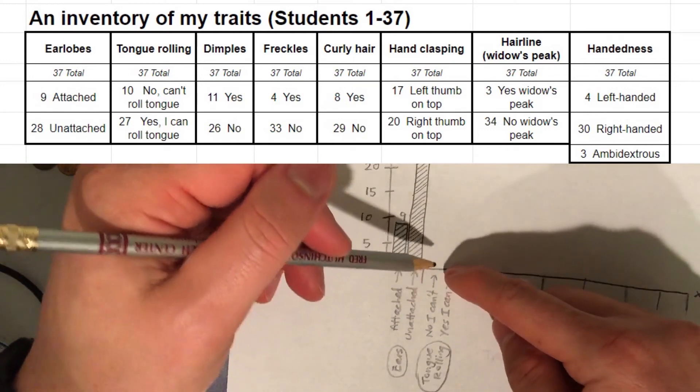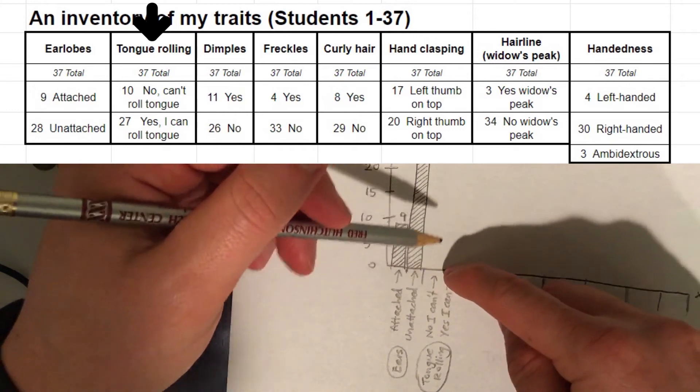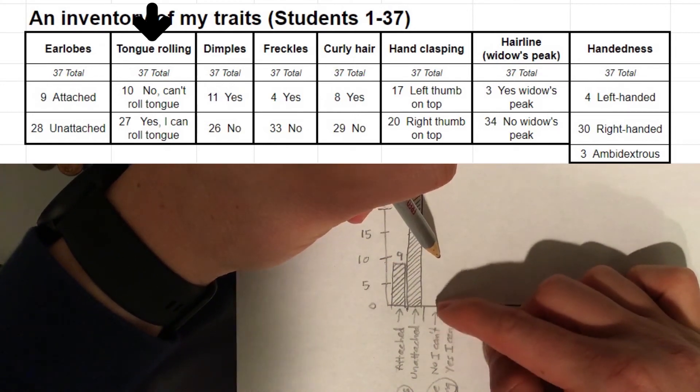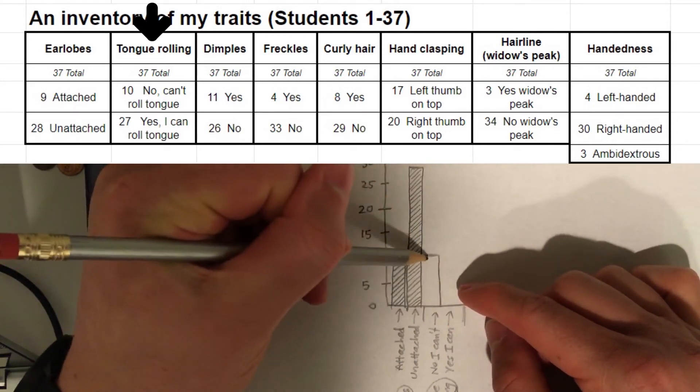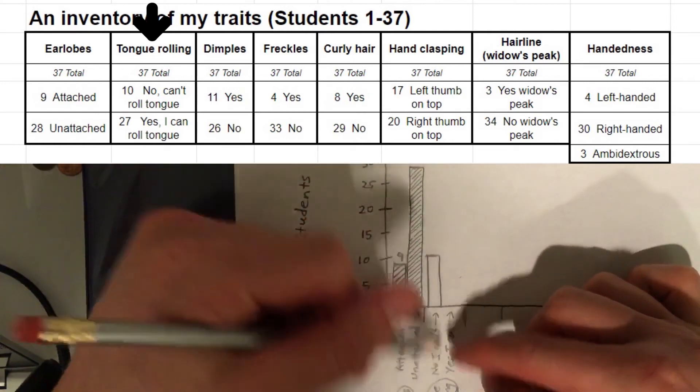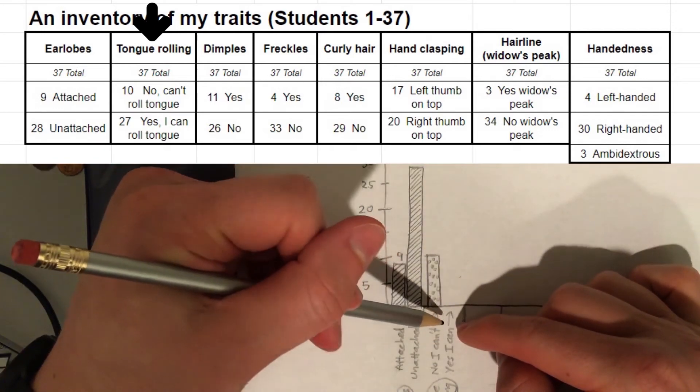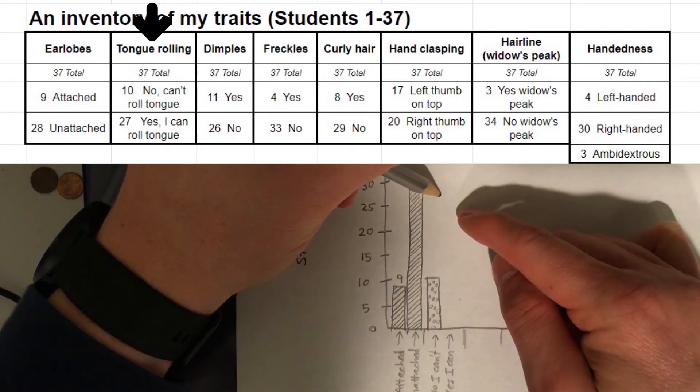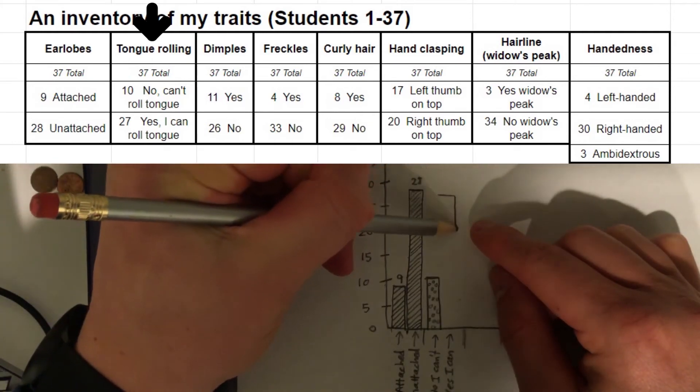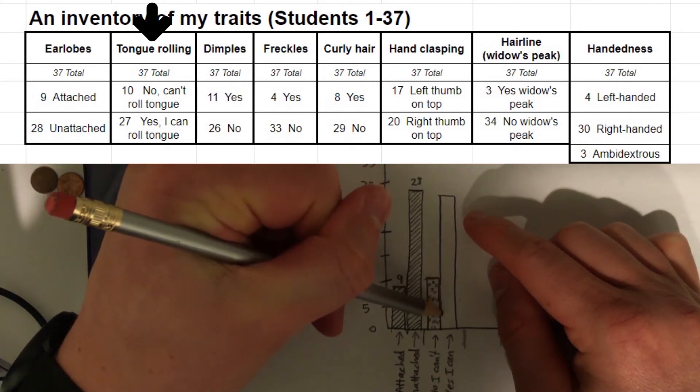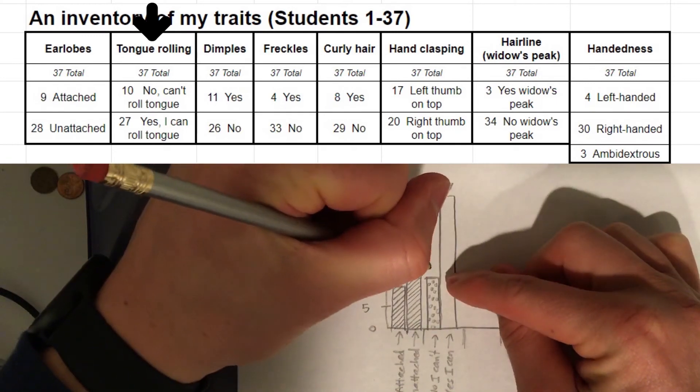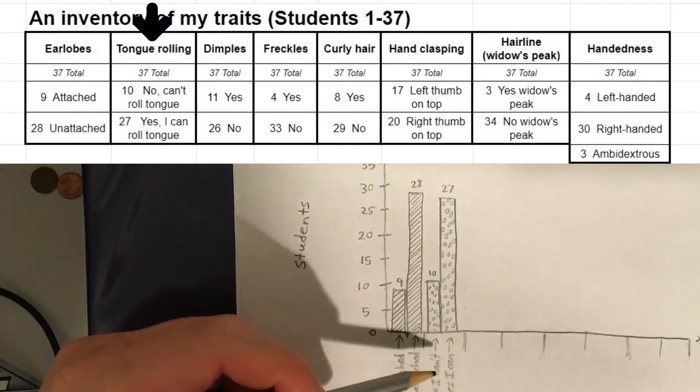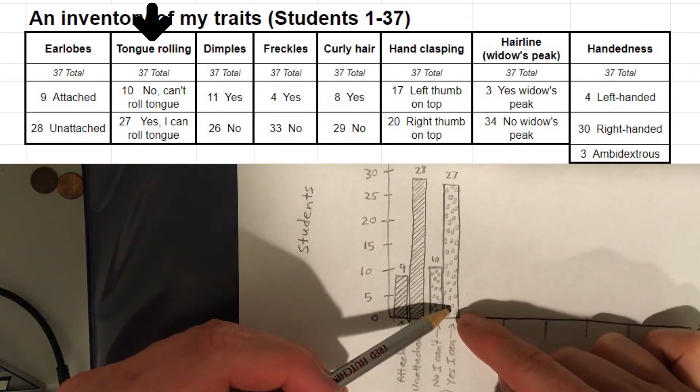So as you can see, a lot more students have unattached earlobes rather than attached earlobes. So that's pretty interesting to realize that there's a big difference. Alright, let's do tongue rolling next. So for tongue rolling, according to the data, it says that 10 students cannot roll their tongue. So let's indicate that on here. So we have 10 right here for the y-axis. 10 students know I can't. So 10 students cannot roll their tongue. So I'm going to mark that with the bar here. And I'm going to do a different design. I'm just going to do little circles here. For, yes I can. Students who can roll their tongue. 27. So 27 is up here. 27 is a little bit below 28. So right about here. Students who can roll their tongue goes here. 27 and 10. Alright, I'm going to fill in the design here for the pattern.